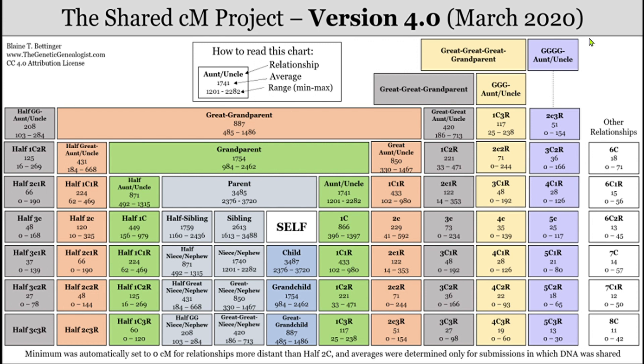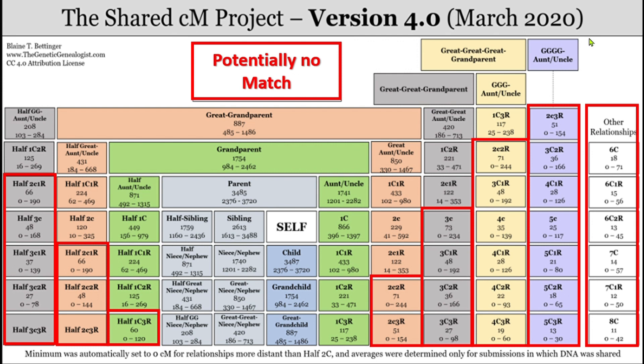As relationships get further away, the number of centimorgans becomes less and less. Right out to the edge there are zero matches — even though somebody could be my third cousin, it's possible I'm sharing no DNA with them whatsoever. This is why it's important that if you've done a DNA sample of a close relative — a sibling or a parent — you can look at matches on their DNA too. They have DNA that you don't have and may show matches very close to you that you don't have.